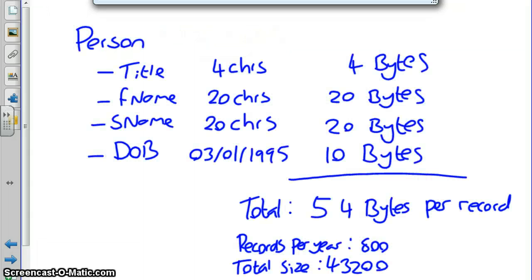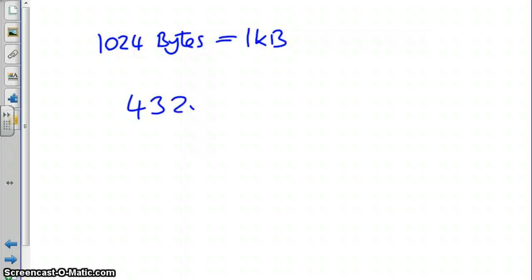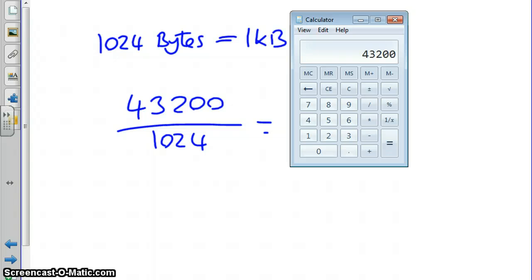Now, as we know, there are 1024 bytes equals 1 kilobyte. So to get the file estimation of 43,200 into kilobytes, we take 43,200, we divide this by 1024, and this gives us 42.1875 kilobytes, or rounded up 42.19 kilobytes.